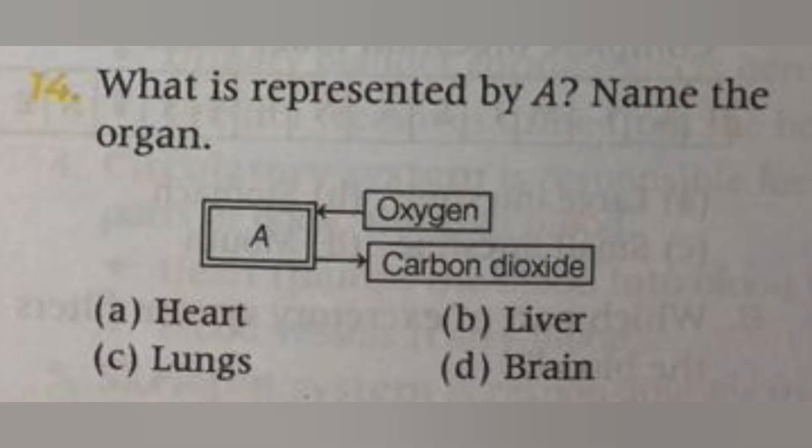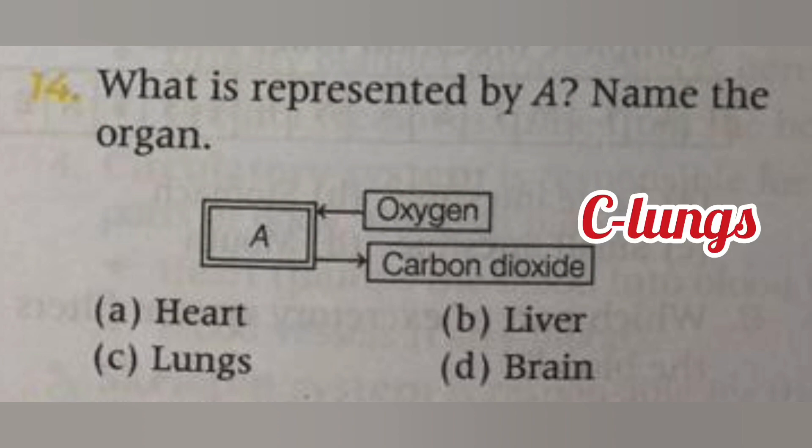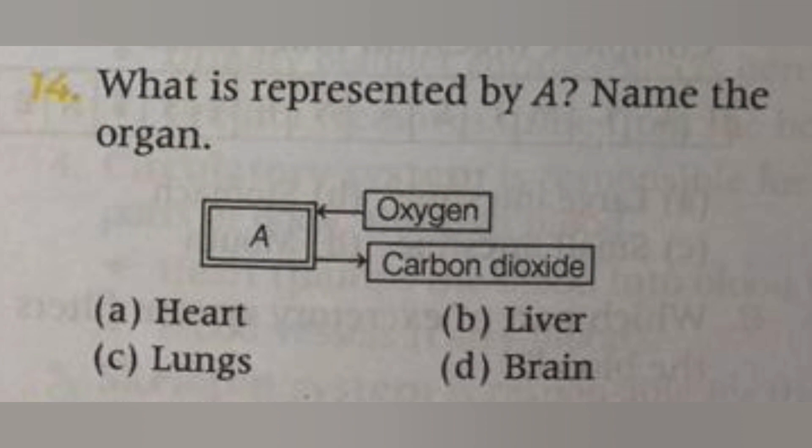Next, what is represented by A — name the organ that outputs carbon dioxide and takes in oxygen? Options: A. Heart, B. Liver, C. Lungs, D. Brain. The answer is C, lungs.